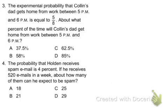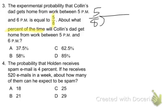Moving on to problems 3 and 4 on the Unit 4 study guide. The experimental probability that Colin's dad gets home from work between 5 and 6 is equal to 5 eighths. About what percent of the time will Colin's dad get home from work between 5 and 6? So we're simply converting 5 eighths into a percent.